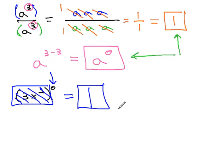Anything to the 0 is always 1. It's the 0 power rule of exponents.